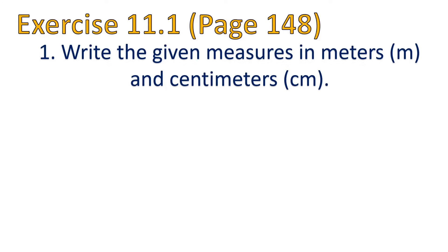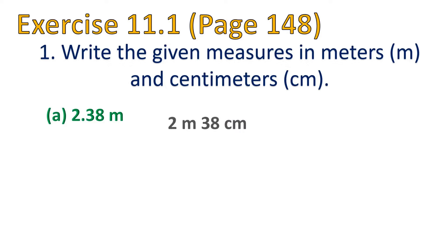The number one exercise is: write the given measures in meters and centimeters. The easy way of doing it is we have to see the number before the point and after the point. For question a, 2.38 meters — before the point is 2 and after the point is 38. As 2 is before the point, we write 2 meters.